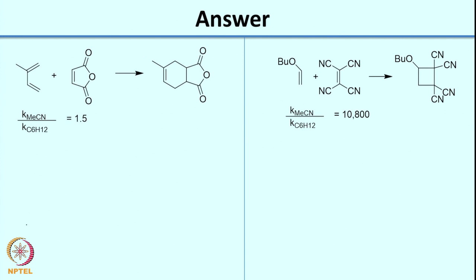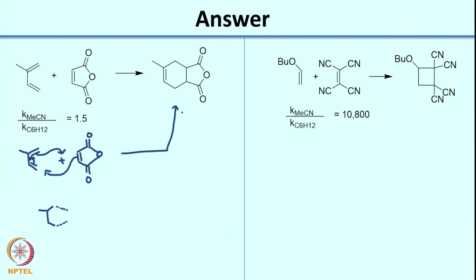If I draw the mechanism, it is a one-step reaction and I can push arrows in either direction. Essentially I am forming a new bond to give the product. In the transition state there is partial bond formation, the rest of the molecule remains unchanged, and there is shifting of the pi bonds. This is what the transition state looks like.